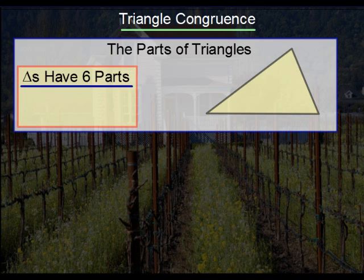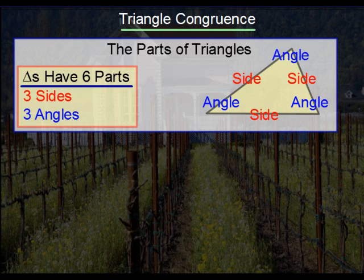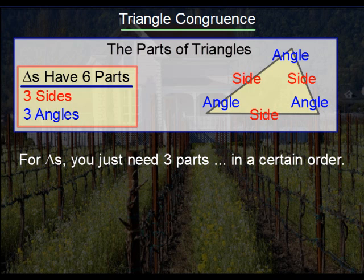Triangles essentially have six parts: three sides and three angles. Typically, for ordinary polygons, you would have to show that all the sides and angles of one polygon are congruent to all the sides and angles of a second polygon. For triangles, you only need three parts, as long as they're in a certain order, and that would be enough to state that the triangles are congruent.